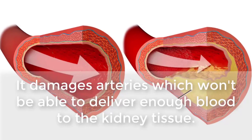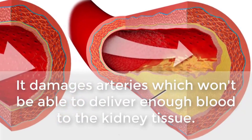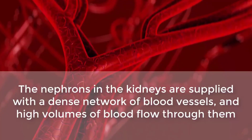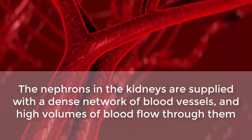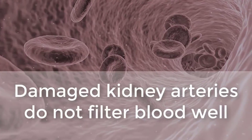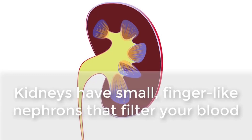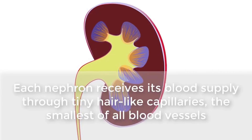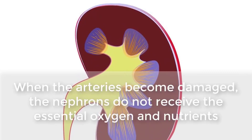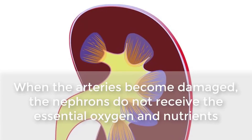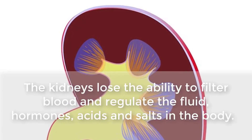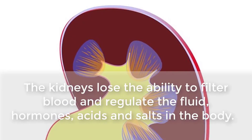Damaged arteries cannot deliver enough blood to the kidney tissue. Over time, high blood pressure harms renal blood vessels. The nephrons are supplied with a dense network of blood vessels through which high volumes of blood flow. Each nephron receives its blood supply through tiny hair-like capillaries — the smallest of all blood vessels. When arteries become damaged, nephrons do not receive essential oxygen and nutrients, and the kidneys lose their ability to filter blood and regulate fluid, hormones, acids, and salts in the body.